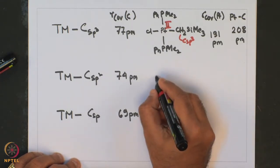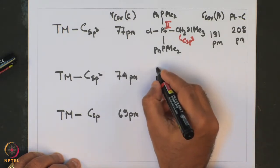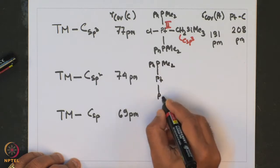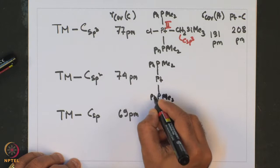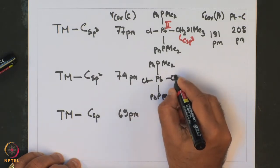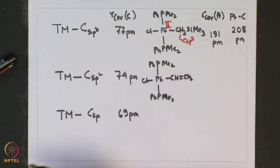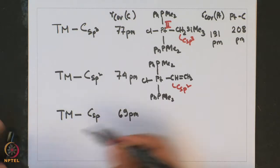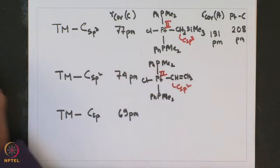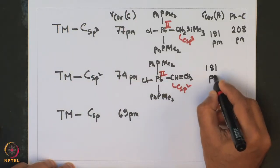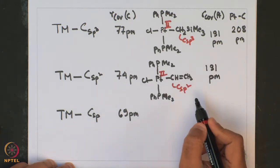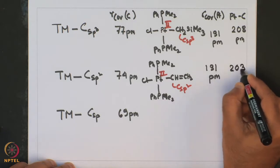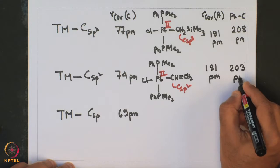In another related complex, when platinum is bound to a CSP2 carbon center, the platinum radius for Platinum(II) remains the same at 131 picometers. That would predict the platinum-carbon bond to be 131 plus 74 picometers, and the observed bond distance is found to be very close at 203 picometers.